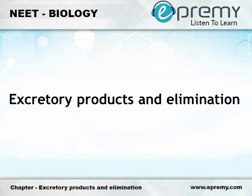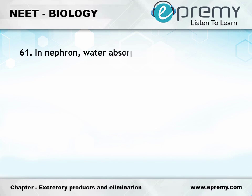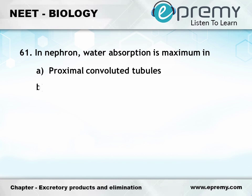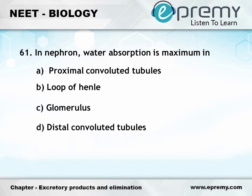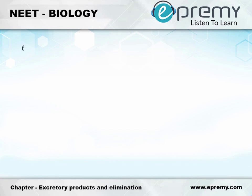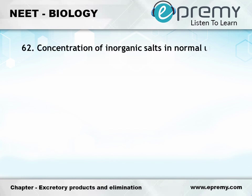Multiple choice questions in Excretory Products and Their Elimination. Question number 61: In nephron, water absorption is maximum in — Option A: Proximal convoluted tubules, Option B: Loop of Henle, Option C: Glomerulus, Option D: Distal convoluted tubules. The answer is Option B: Loop of Henle.